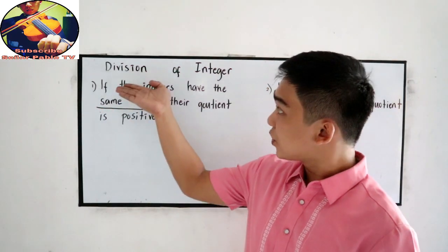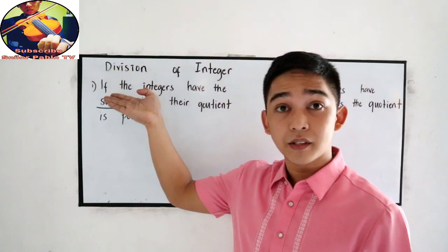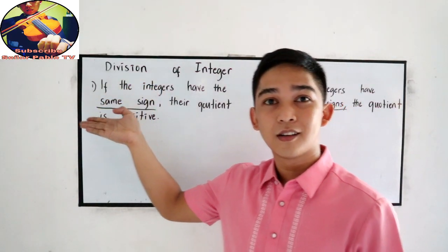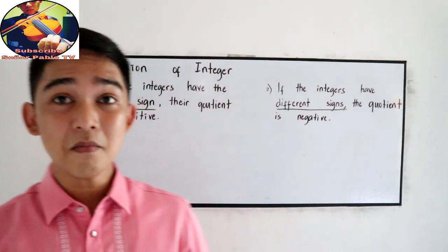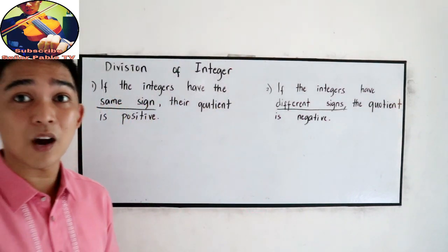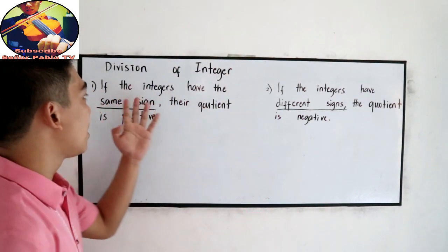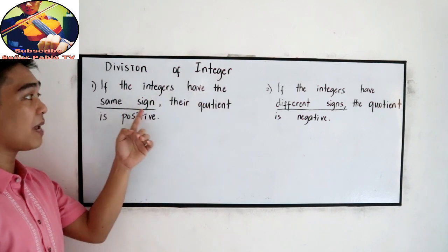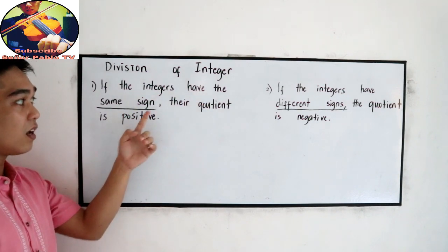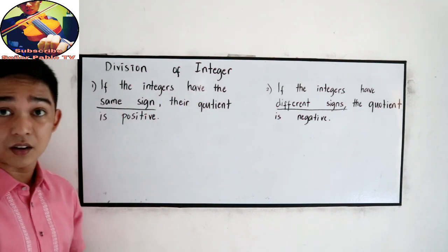Our last operation: division of integers. This is the same rule as our multiplication. If the integers have the same sign, their quotient is positive.